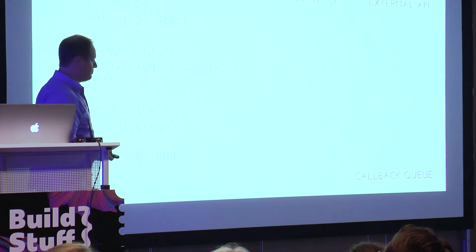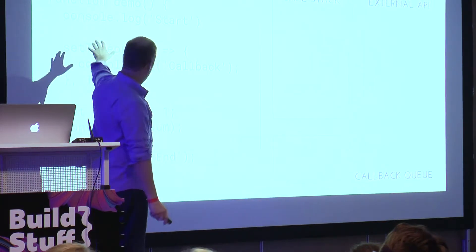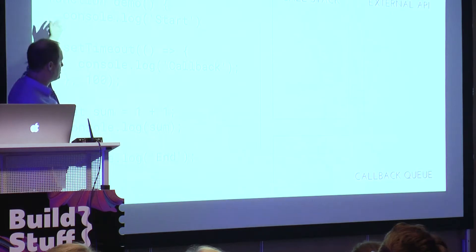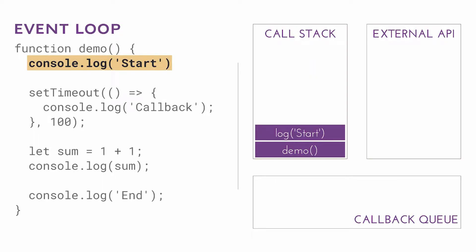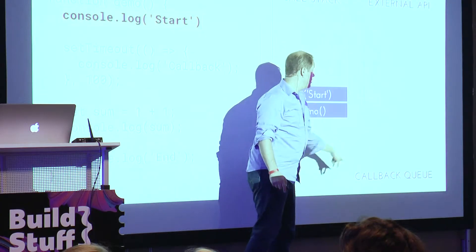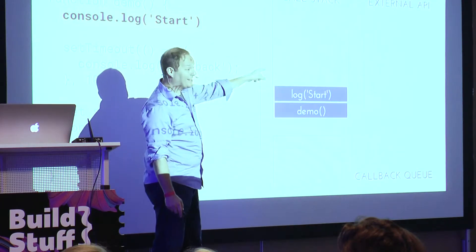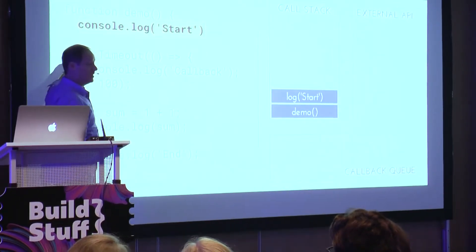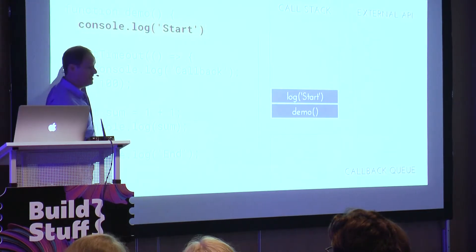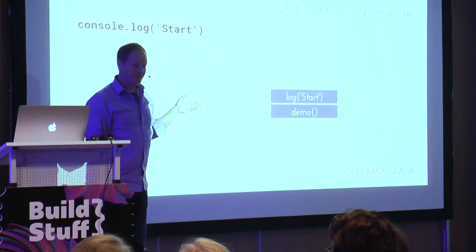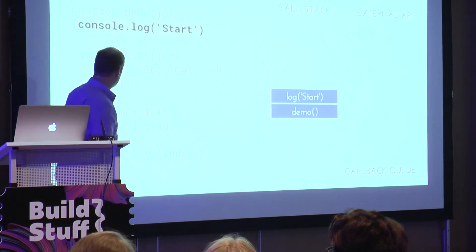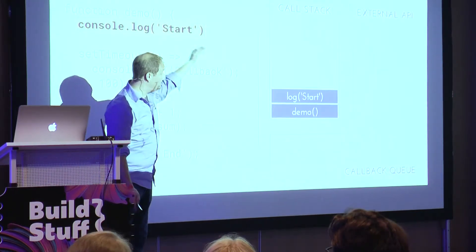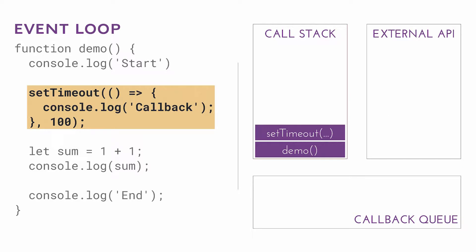It's important to talk through how the event loop works to understand why we care about finding newer ways to have threads in our applications. Say we have a simple application: we're logging out a start and an end, with some sort of a callback using setTimeout, and in the middle we add a couple numbers together. When any JavaScript application is running with the event loop, we have a few important pieces: a call stack, external APIs, and a queue. setTimeout is not actually part of JavaScript — it's an external API in the browser.